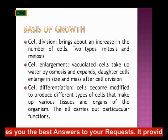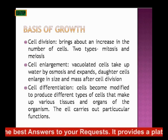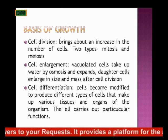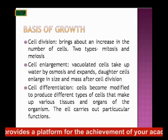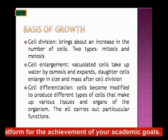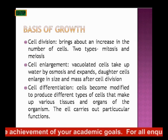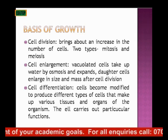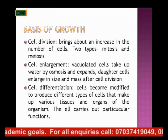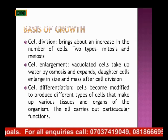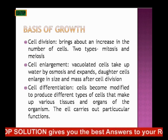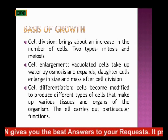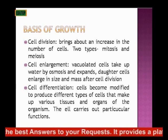Now we talk about cell enlargement. After the cell has divided, the vacuoles take up water by osmosis — we've also talked about osmosis. Cell enlargement involves the vacuolated cells taking up water by osmosis and expanding. The cells become enlarged in size and mass after cell division. So, cell division occurs first, then we have cell enlargement.